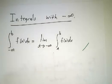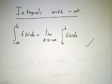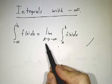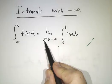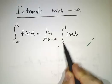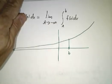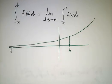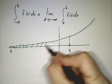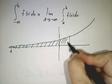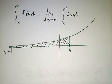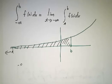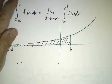Integrals with minus infinity involve integrating infinitely far to the left. Instead of taking a limit as t goes to infinity, we start at a point t and take the limit as t goes to minus infinity. We pick a point t way out to the left, figure out the area from t up to our bound, and then push t leftward, taking the limit as t goes to minus infinity.